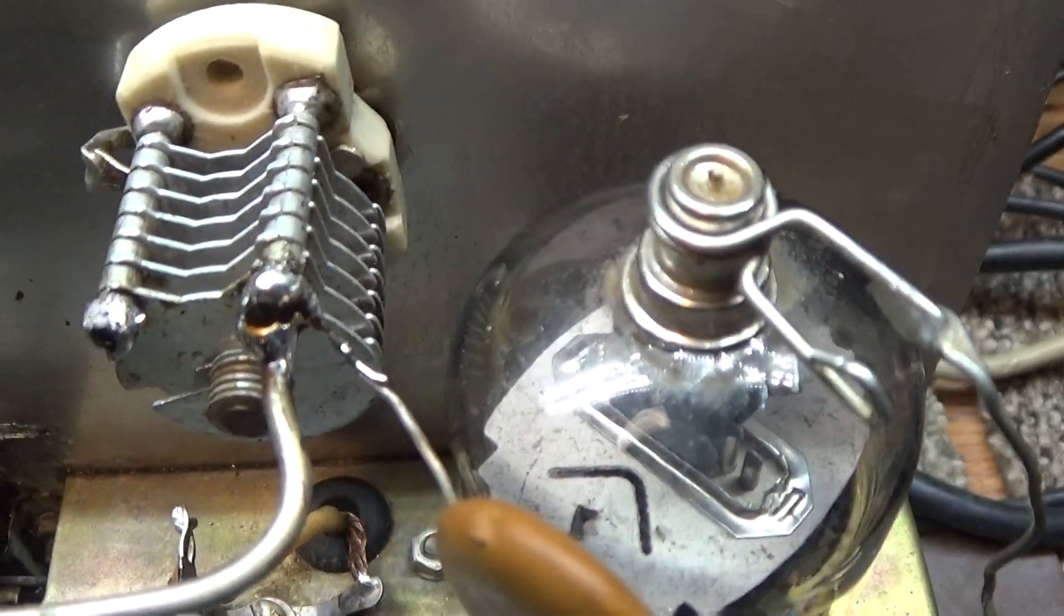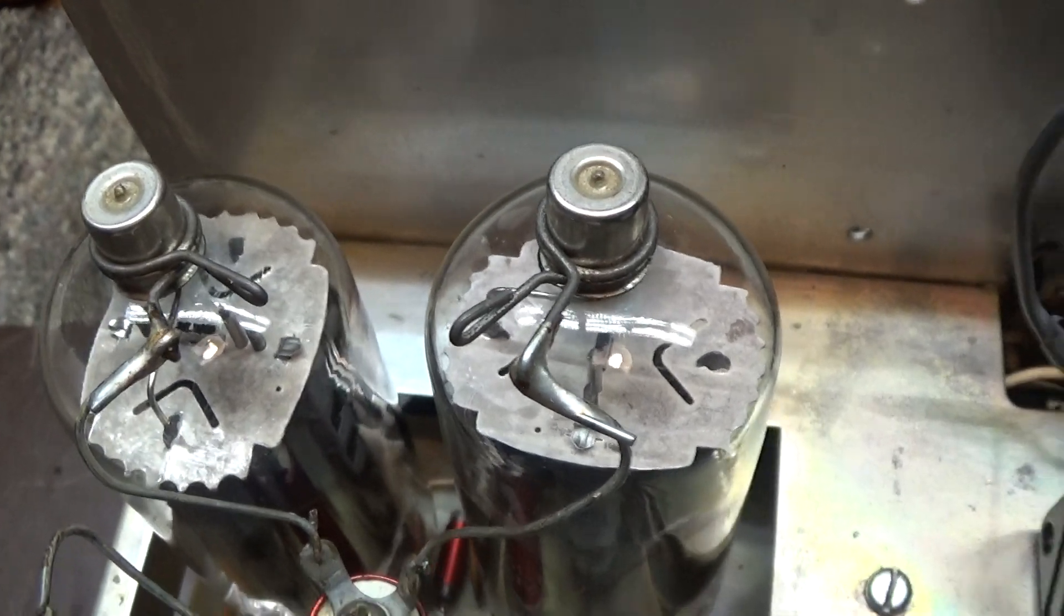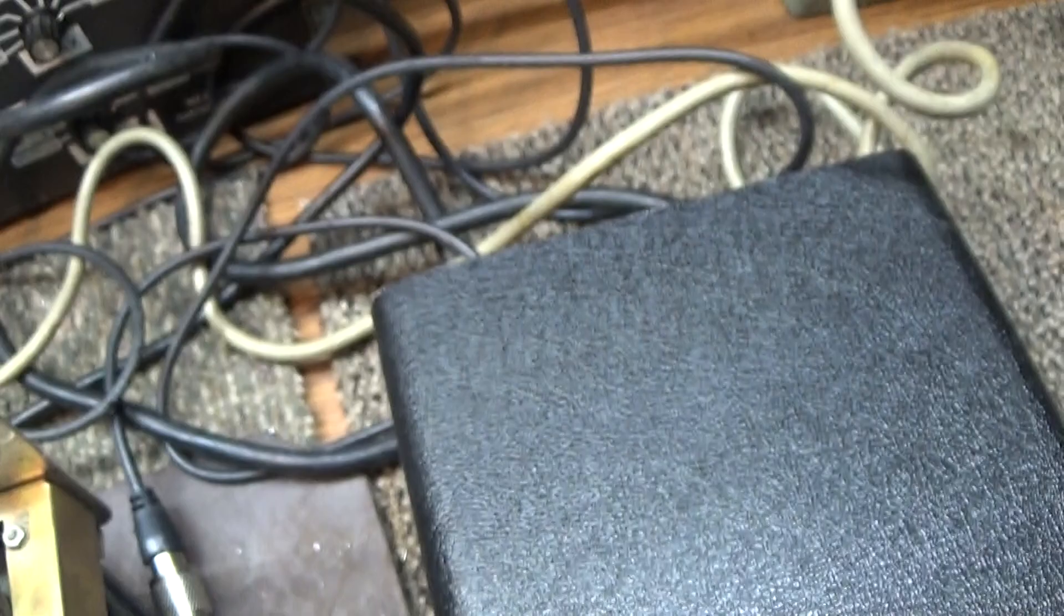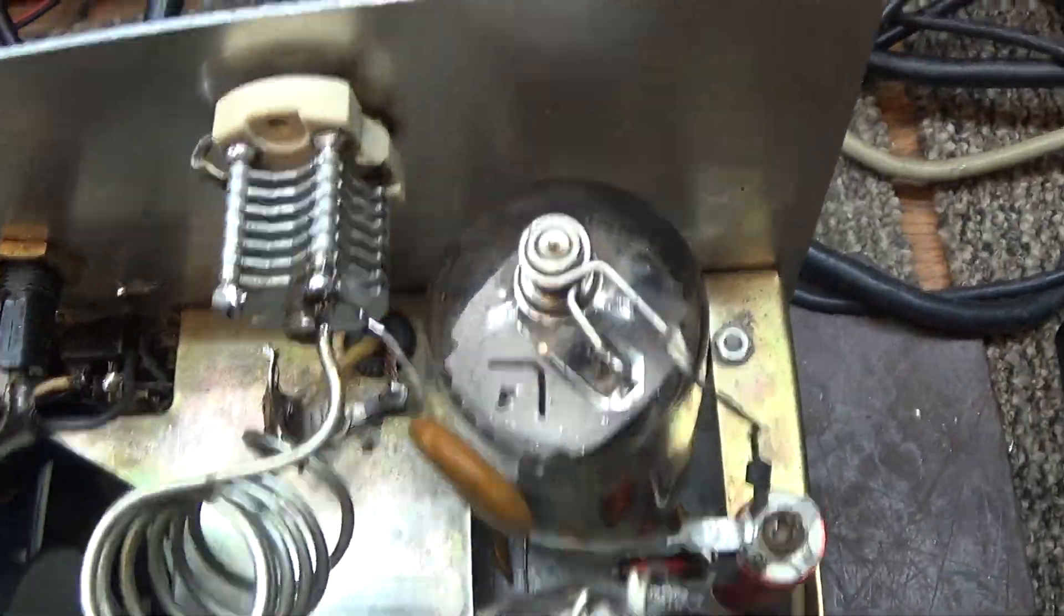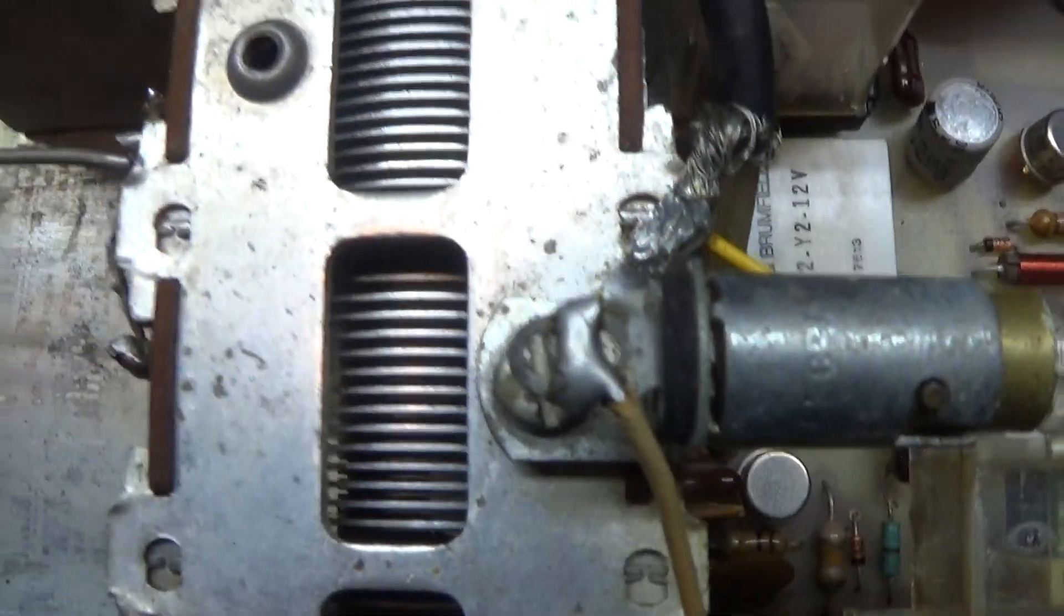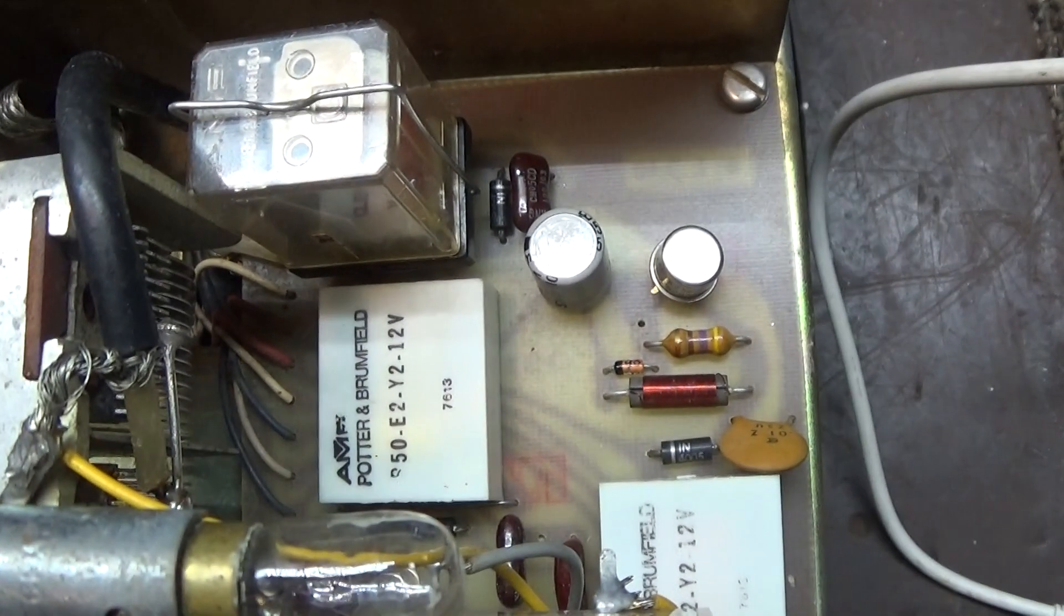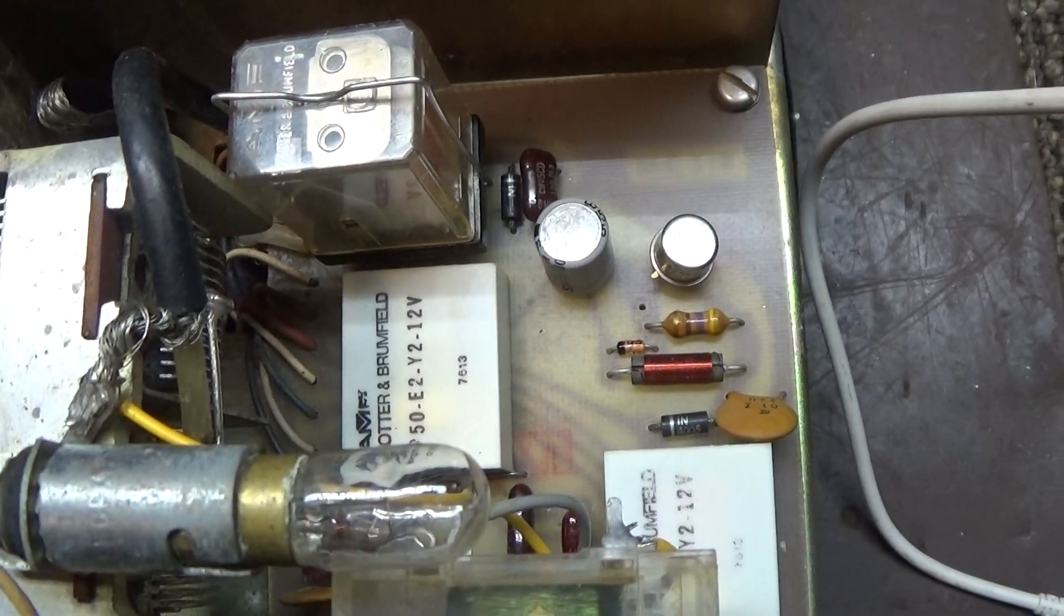One other thing: if you see the bottom of those 6KD6s, it's big at the bottom so it will fit either the small one or the big one, but the big one will not fit the small one. Everything else is straightforward - driver tune cap, final tune, pi coil, pi load cap, the preamp and key circuit, low voltage stuff.